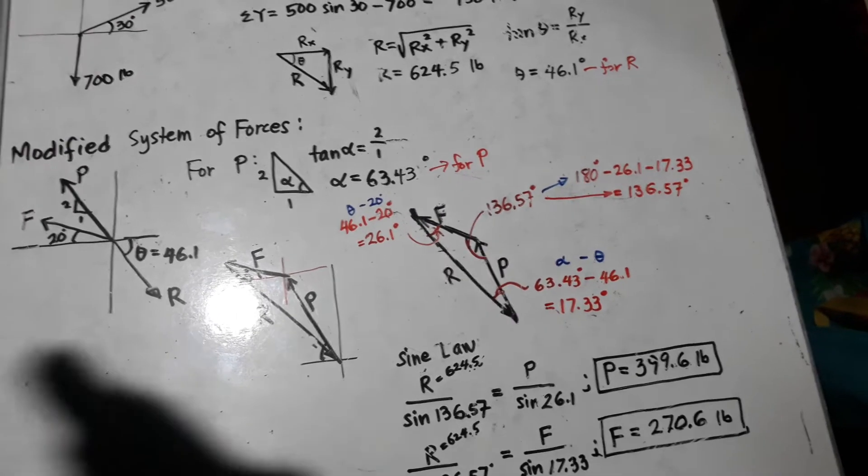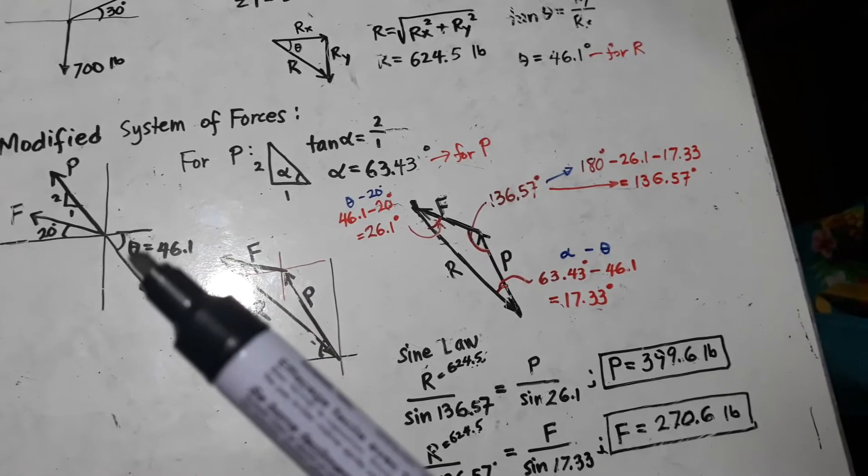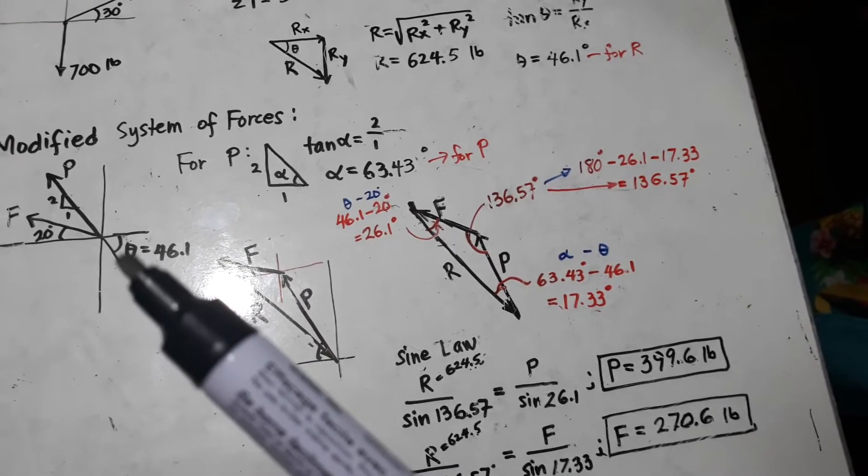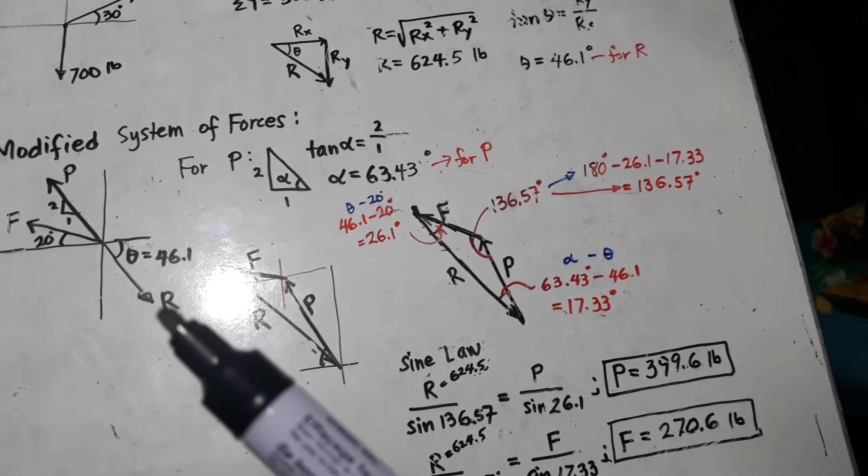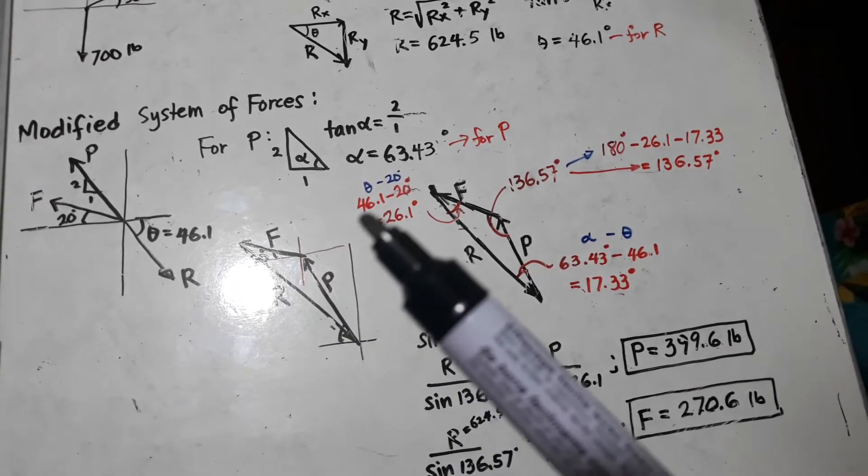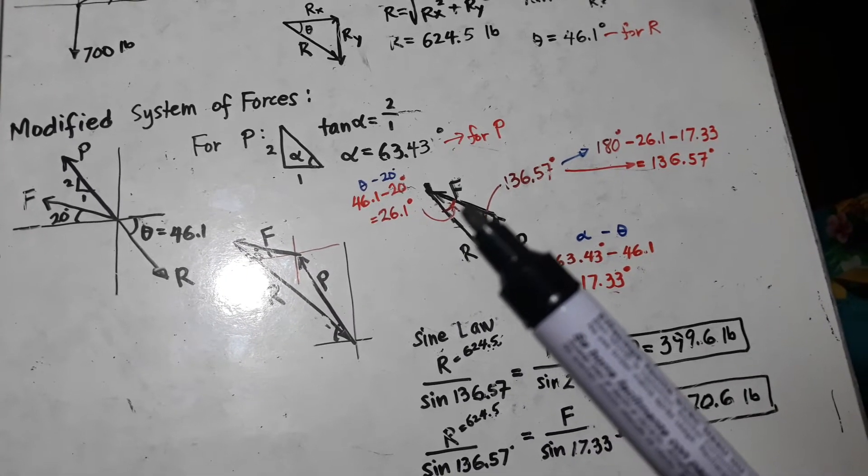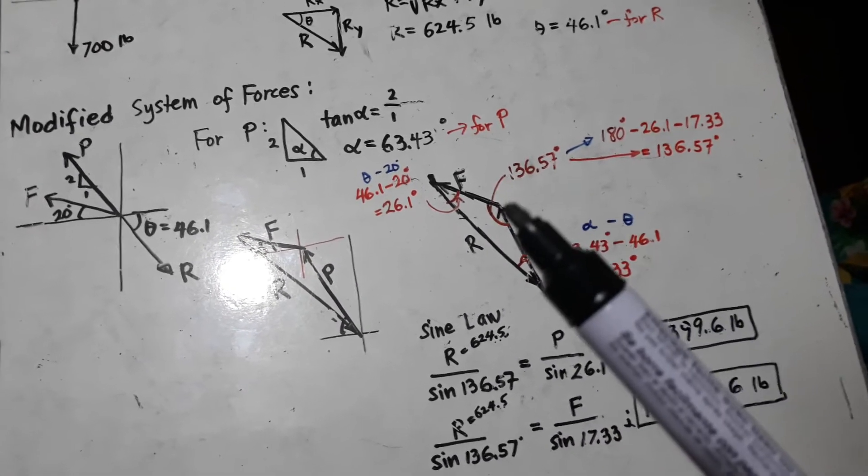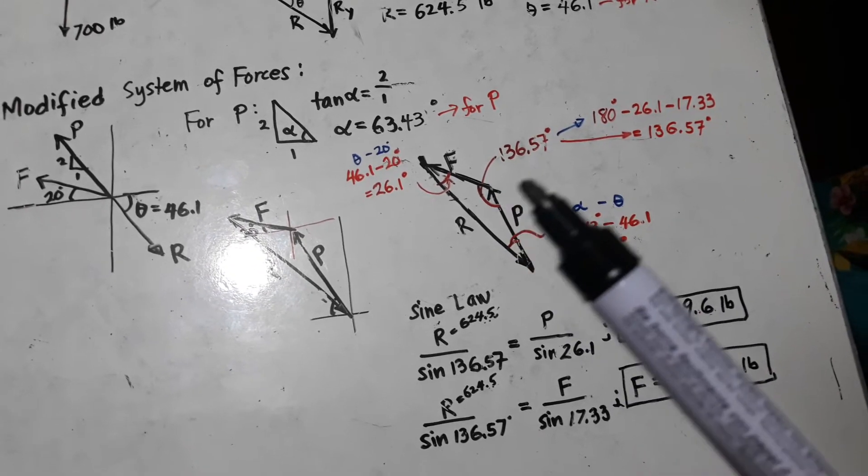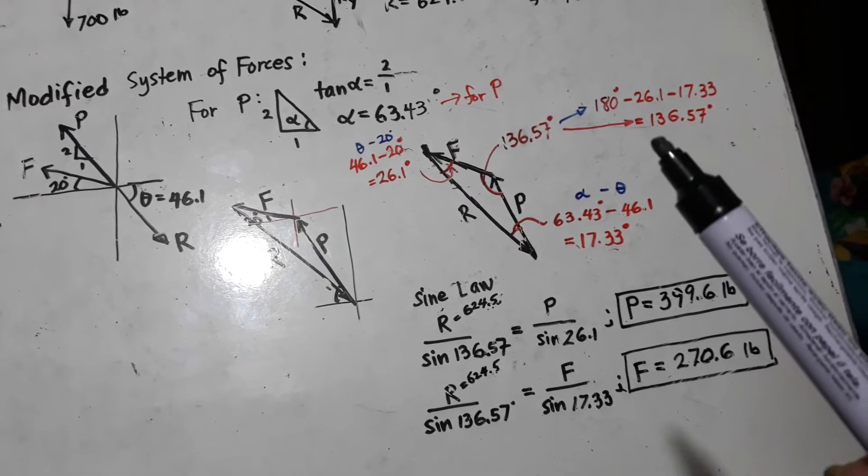Likewise, the angle between F and R, here, F and R, I am going to get the difference also because R here is 46.1, and for F, it is 20. So, if I am going to take the difference, the angle here is 26.1. So, the remaining angle here can be obtained by subtraction. So, it is 136.57 degrees.